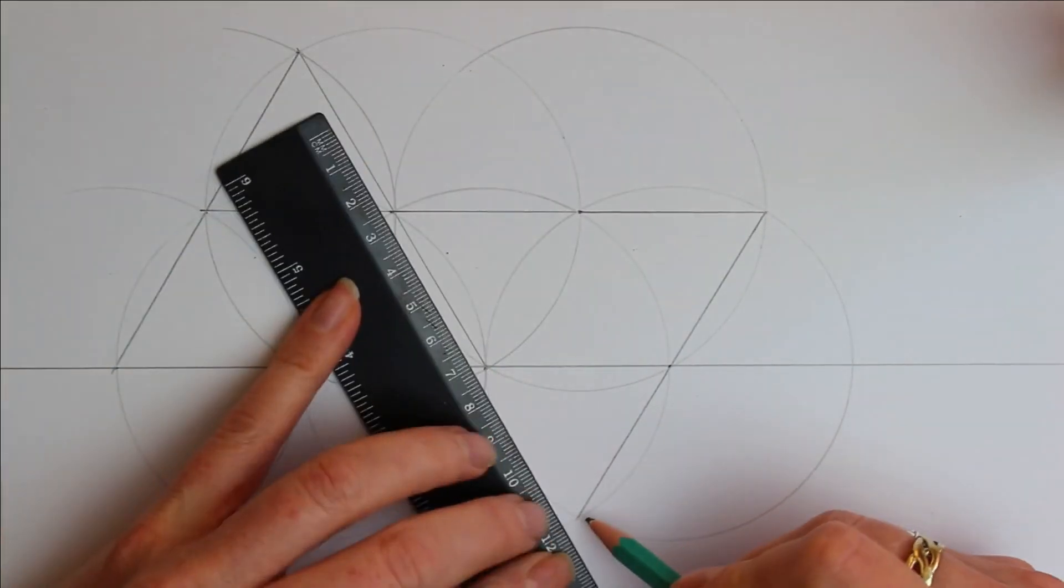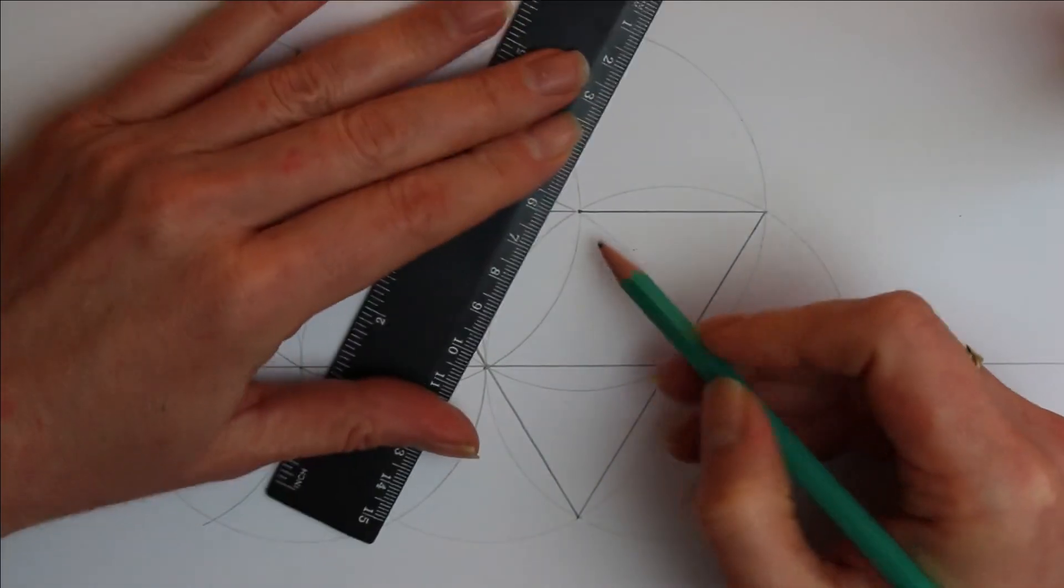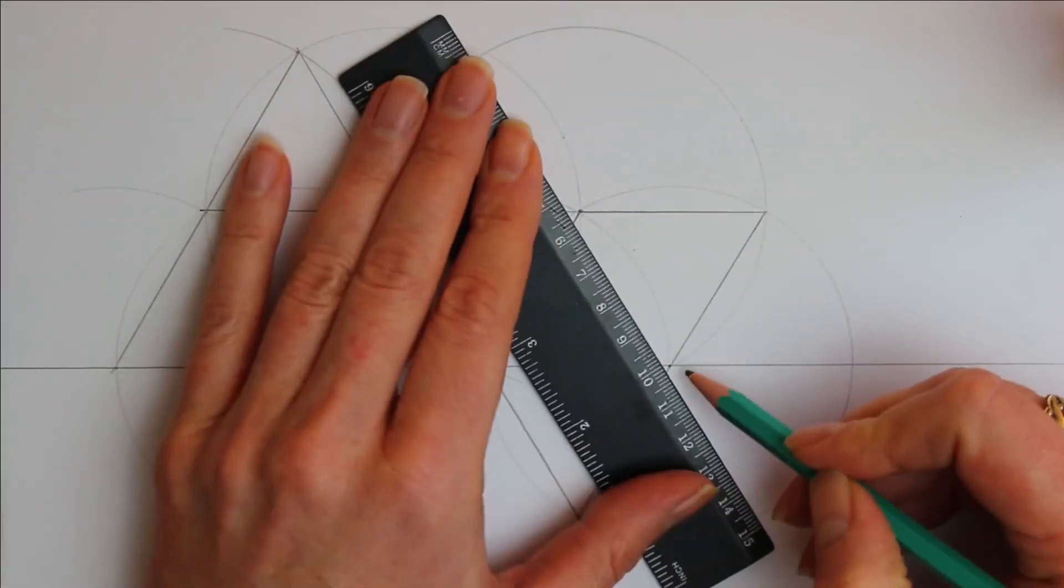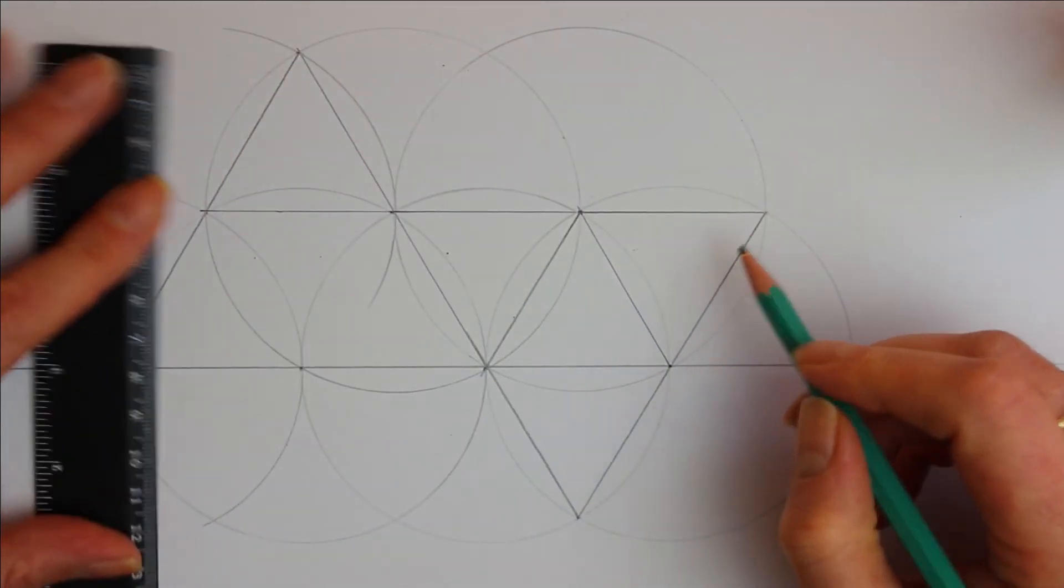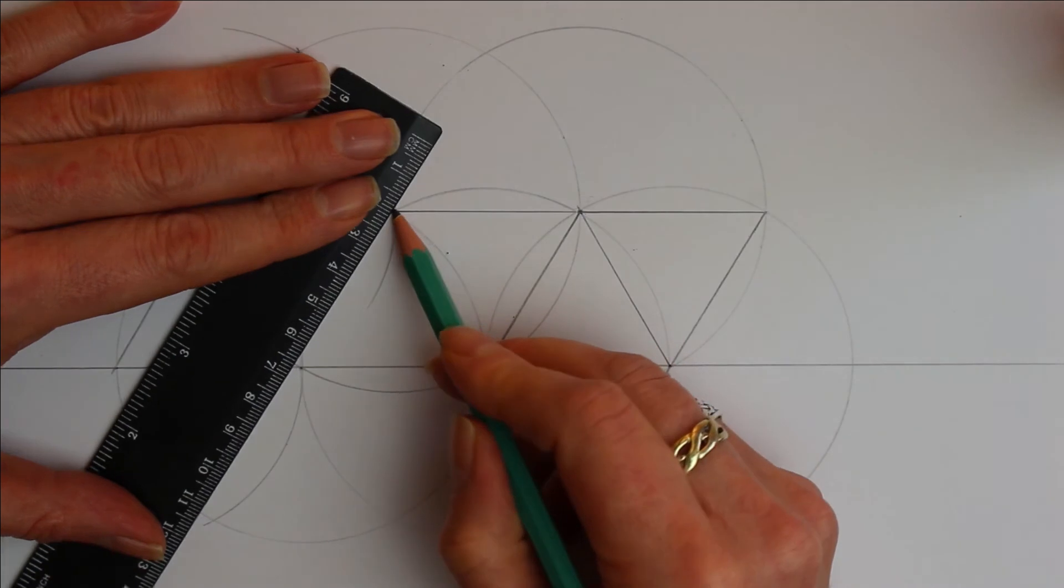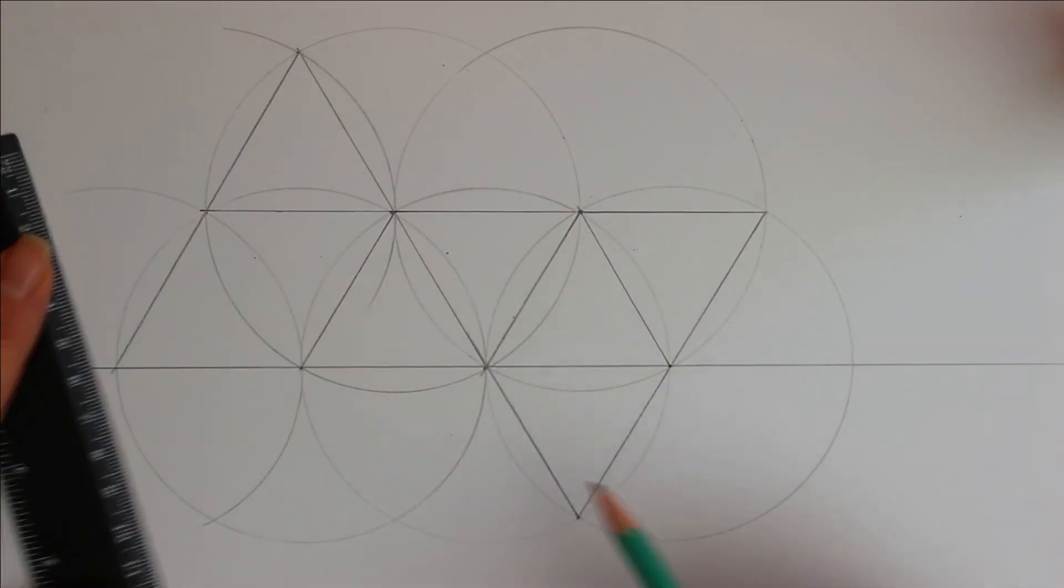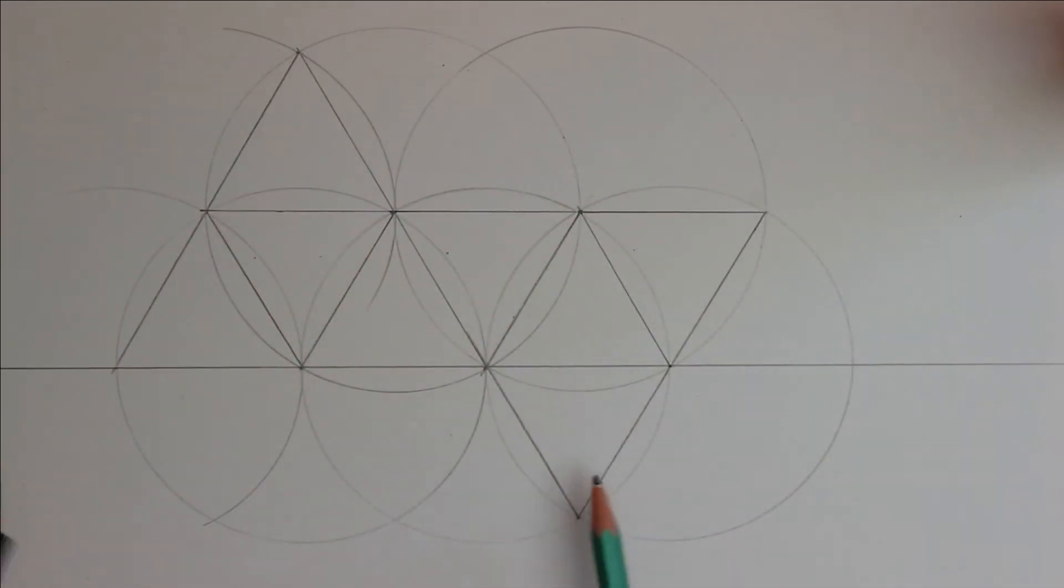And join this one up here. Let's just create another equilateral triangle there. And down here. And is that one more line to go? So there's our basic net of the octahedron.